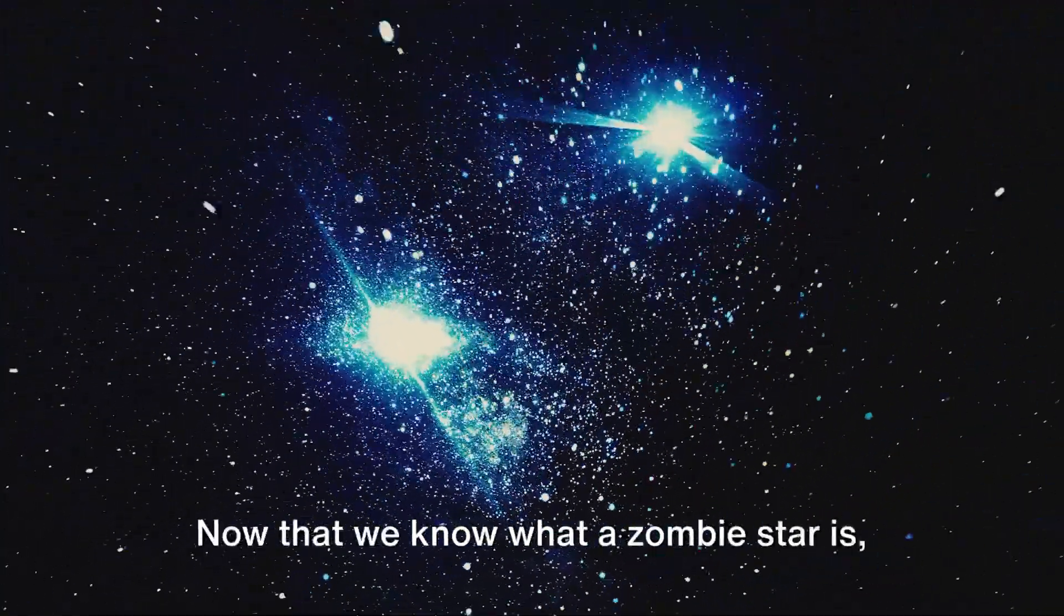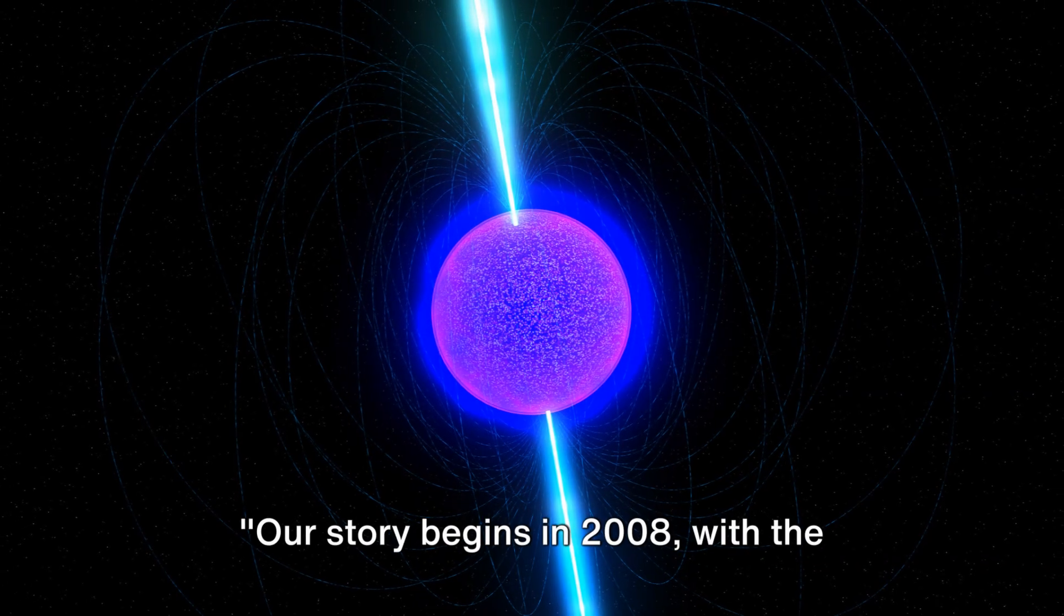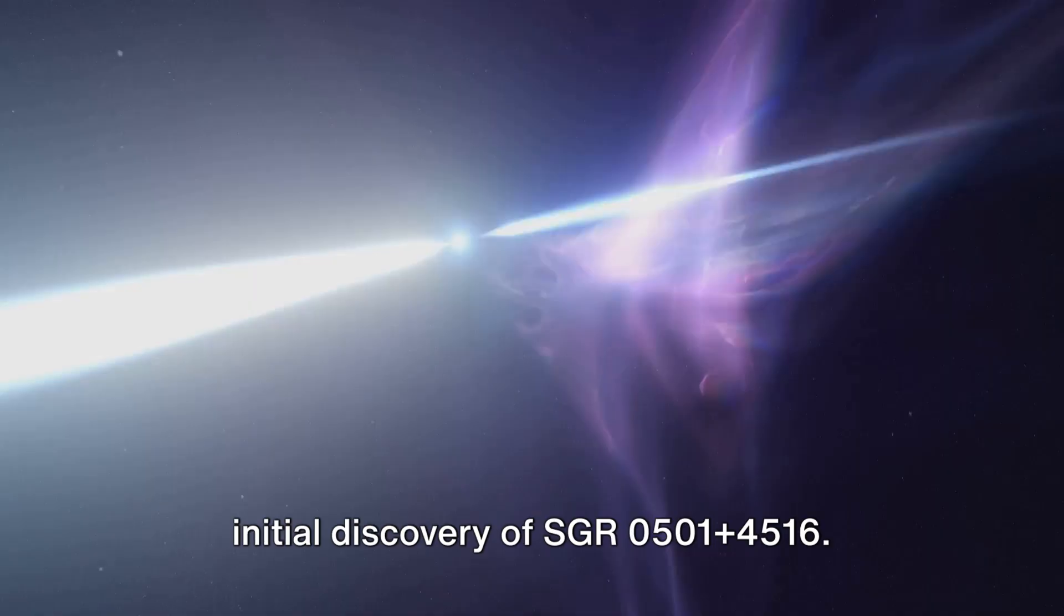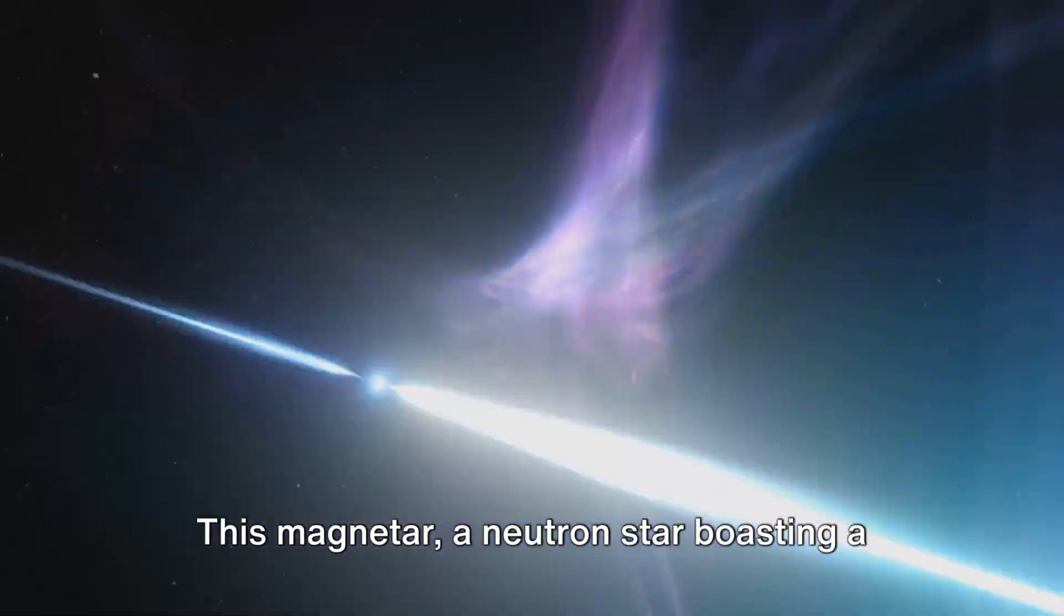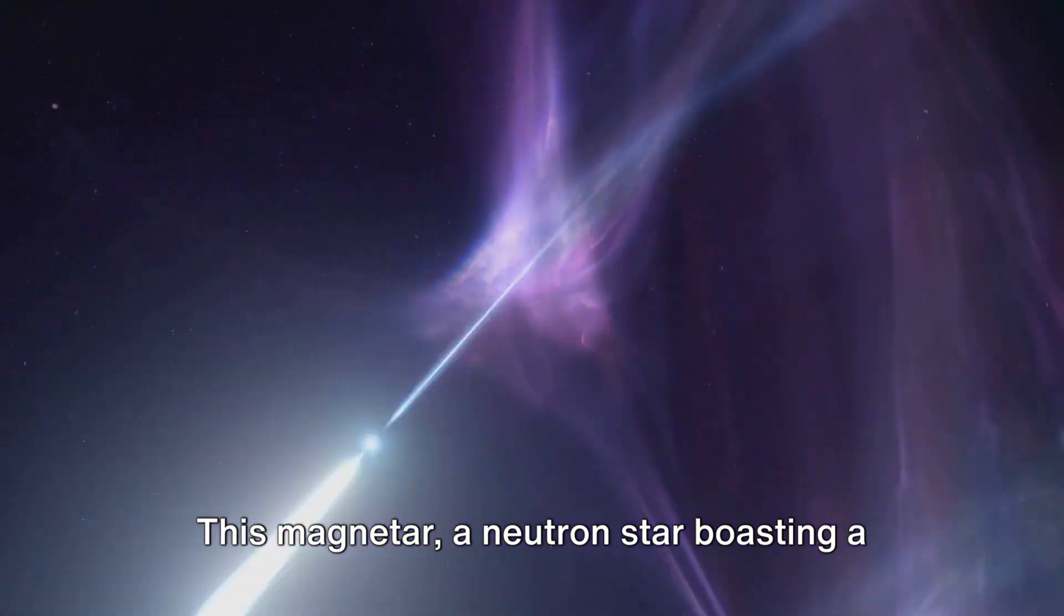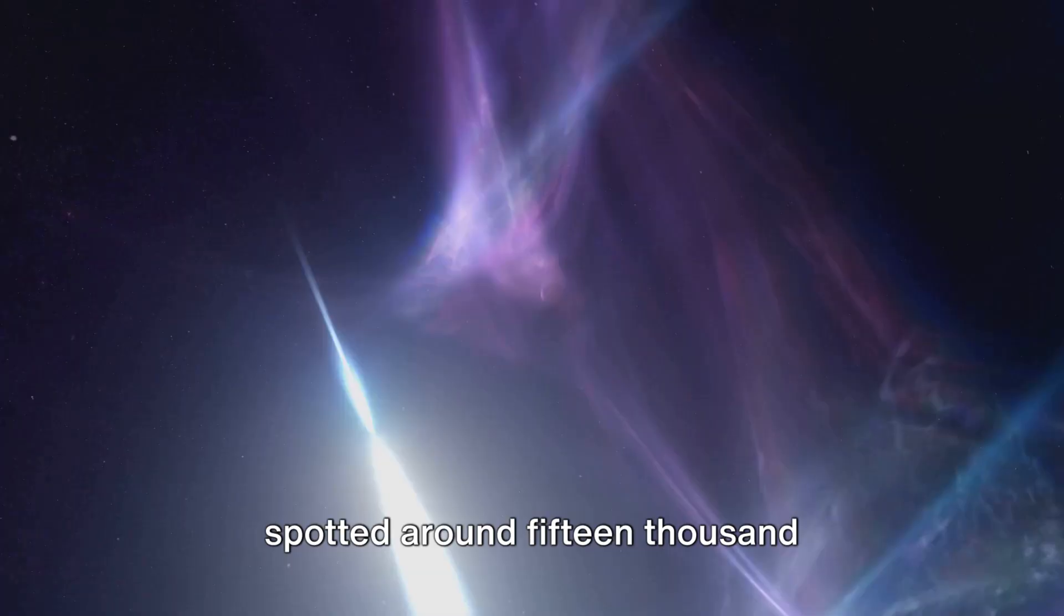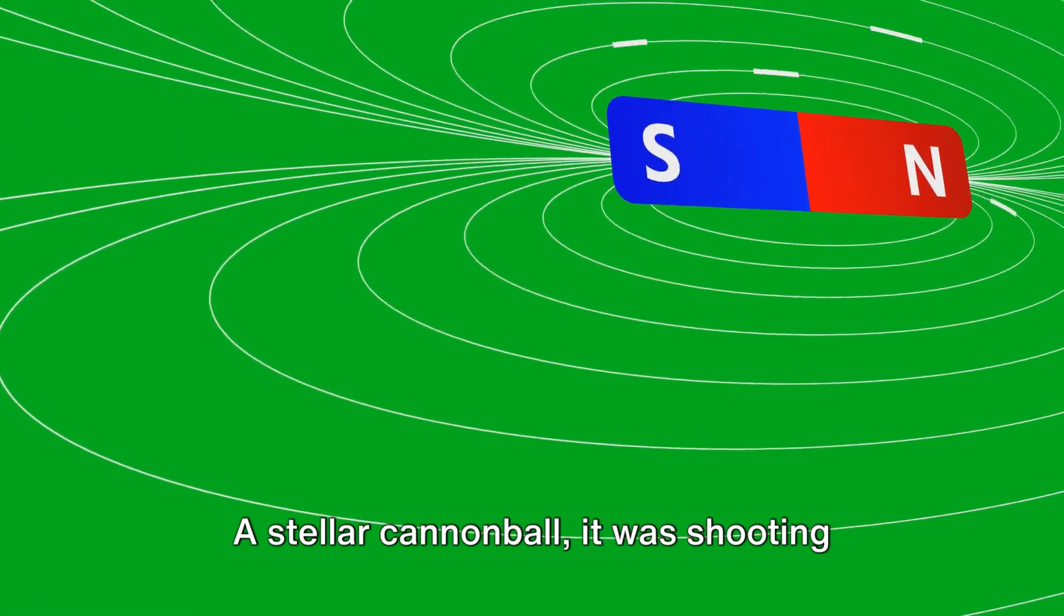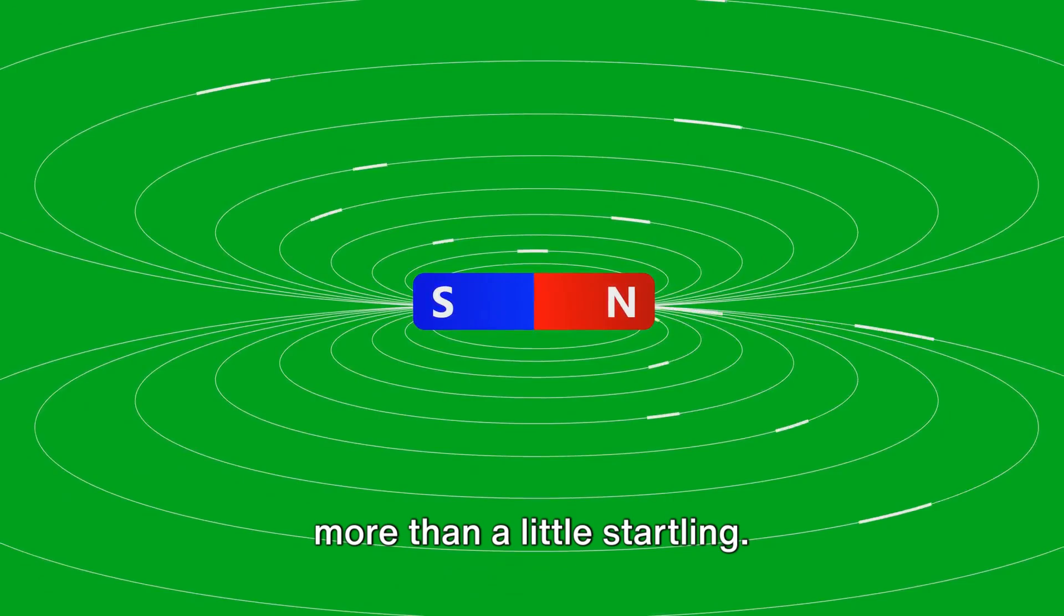Now that we know what a zombie star is, let's explore how this one came to be. Our story begins in 2008, with the initial discovery of SGR 0501 plus 4516. This magnetar, a neutron star boasting a magnetic field of immense power, was spotted around 15,000 light-years from Earth.